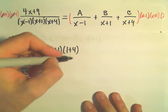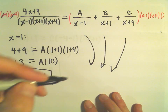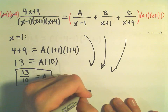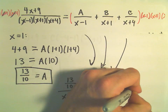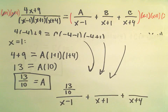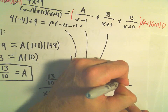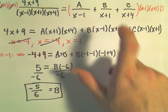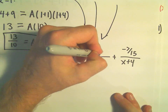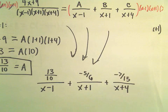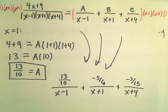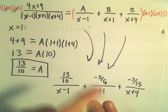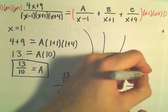So our partial fraction decomposition, rewriting the original expression, is: 13 over 10 all over (x minus 1), plus negative 5 over 6 all over (x plus 1), plus negative 7 over 15 all over (x plus 4). You could get common denominators and write all of this back as a single fraction, and you would see that you get the original rational expression back. But this is our final answer — the partial fraction decomposition.